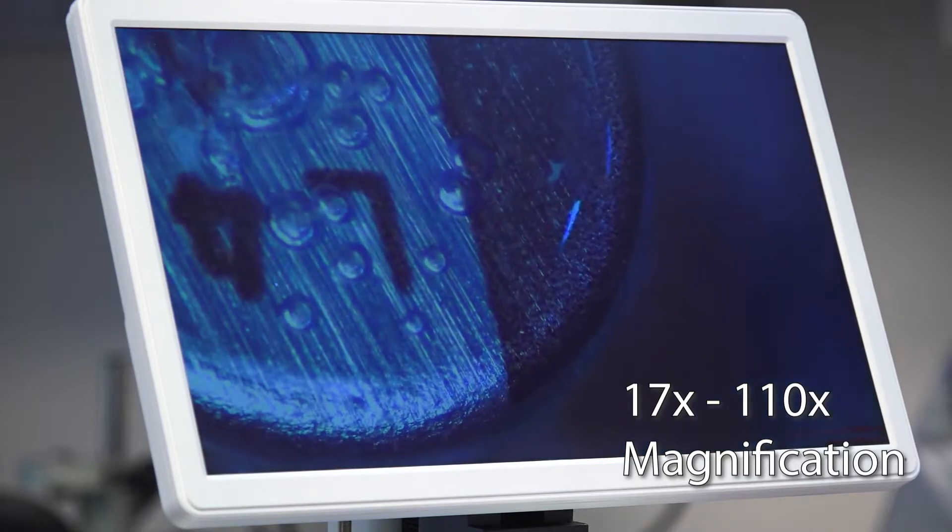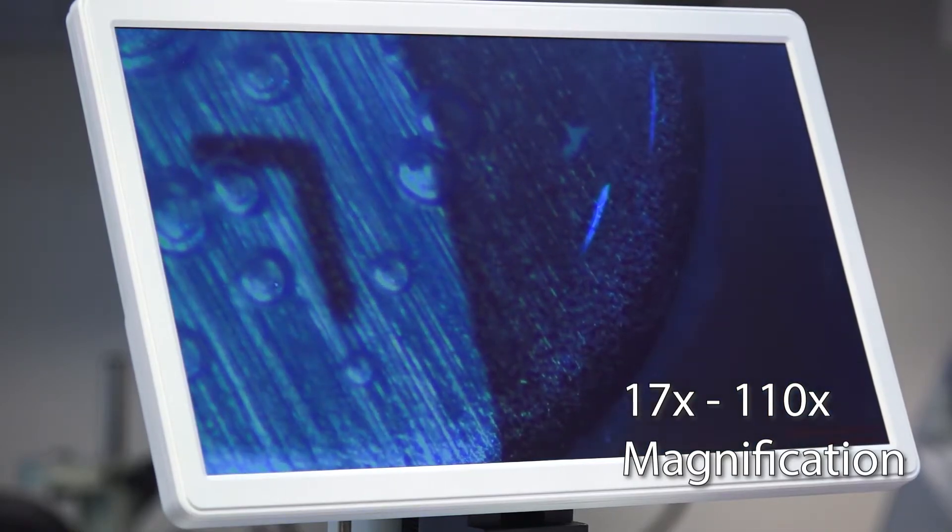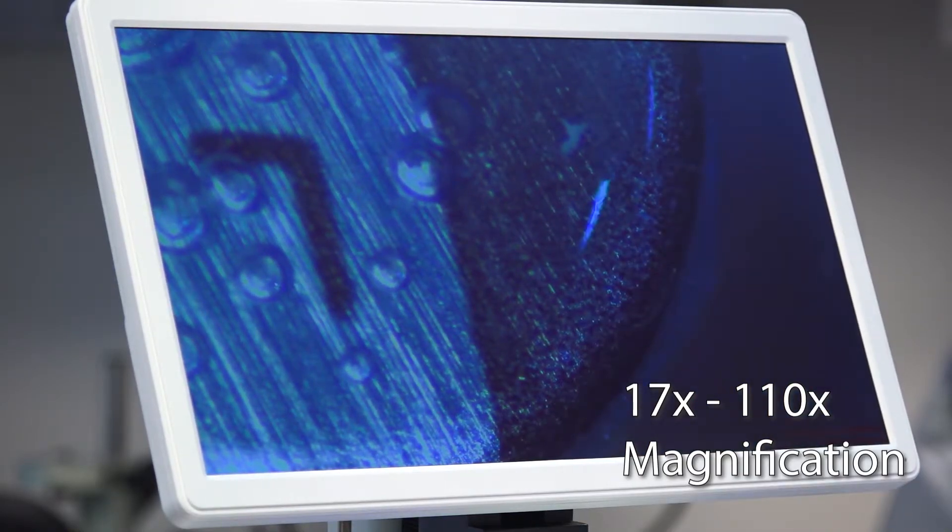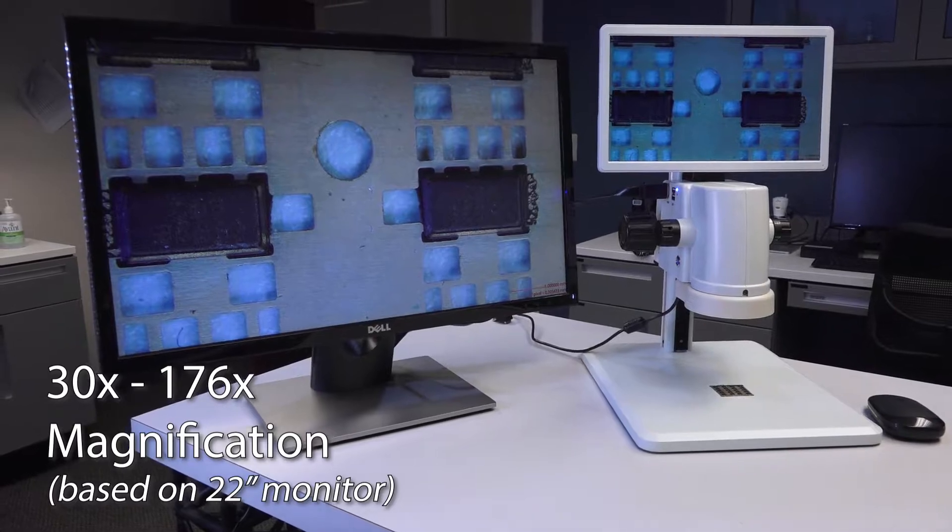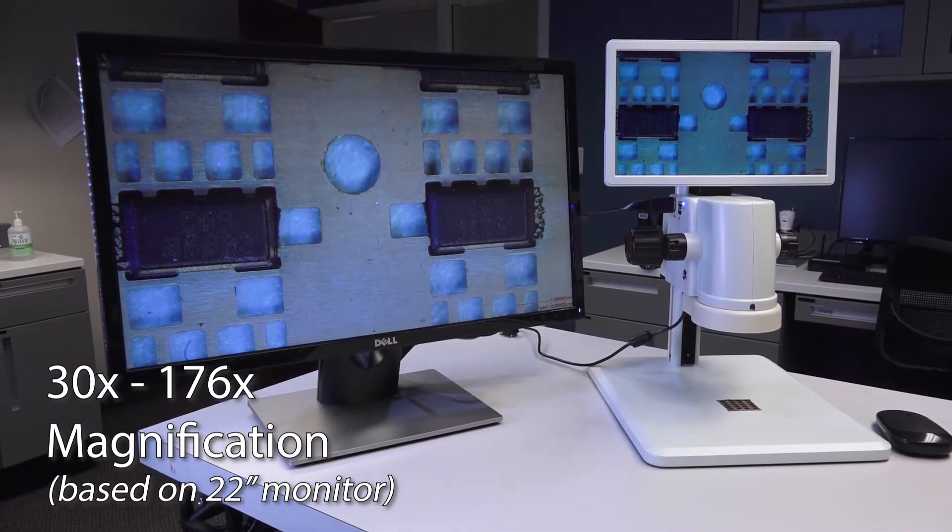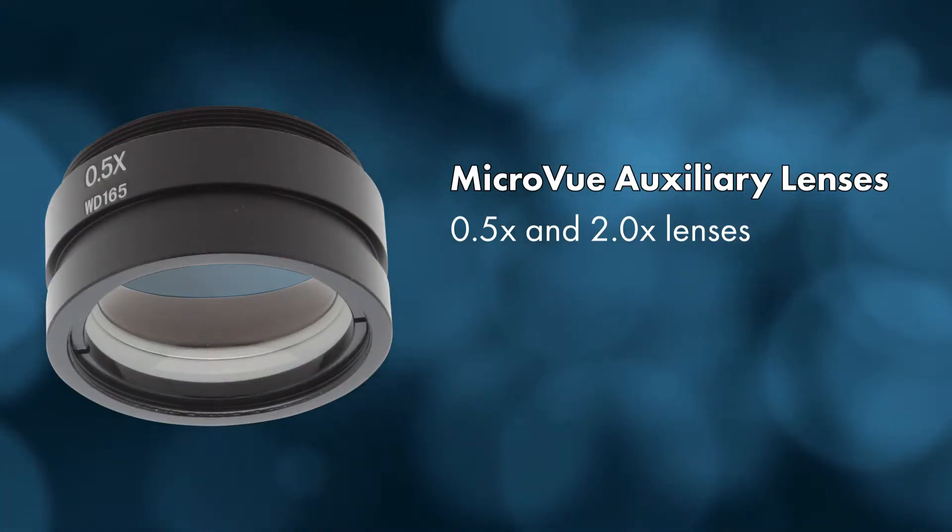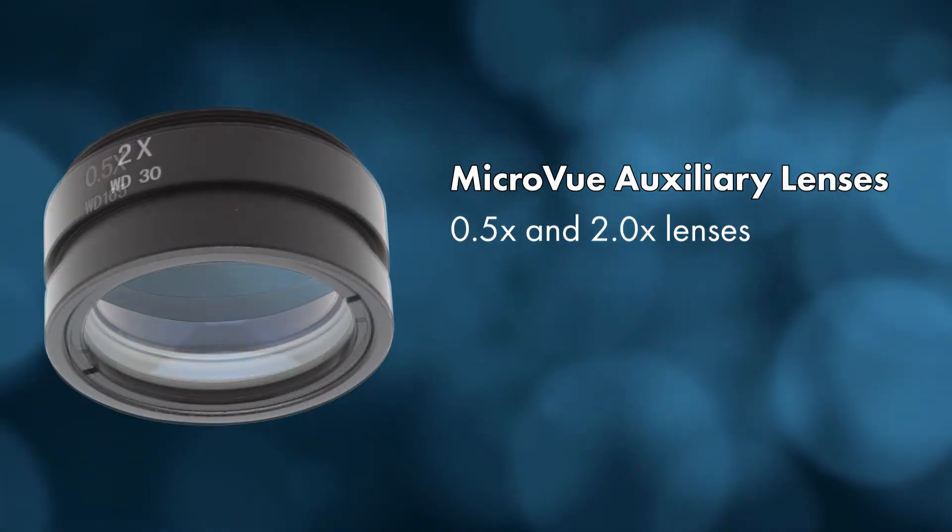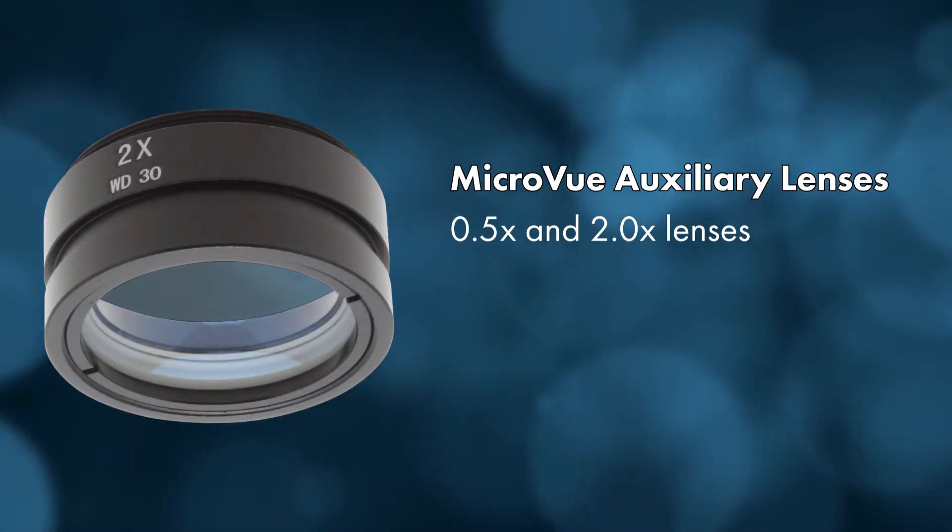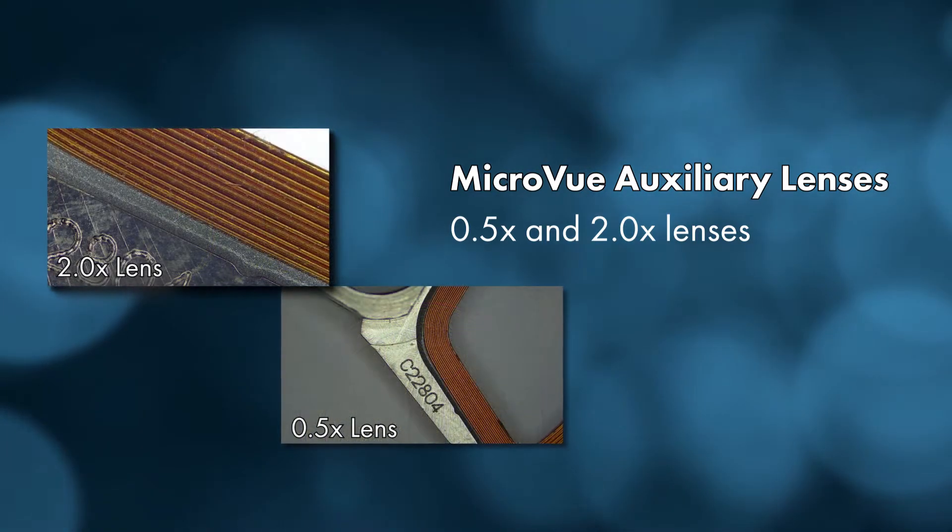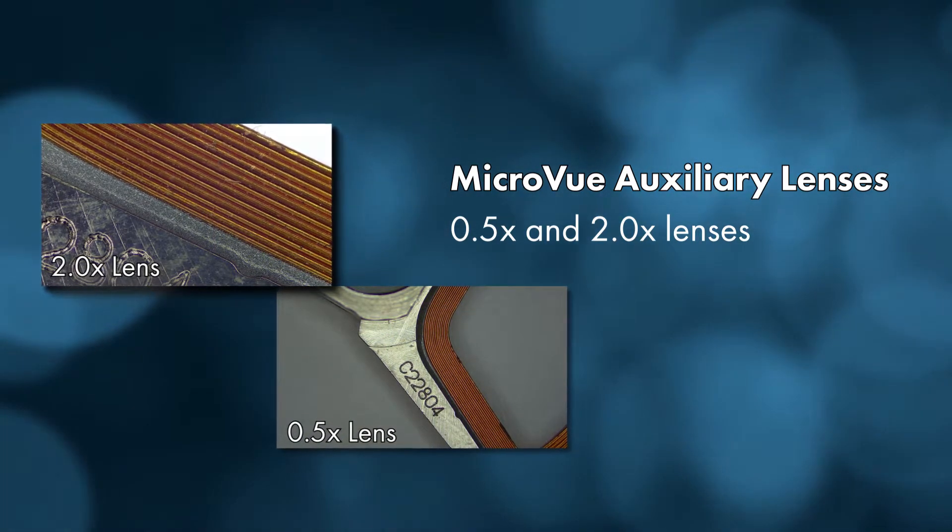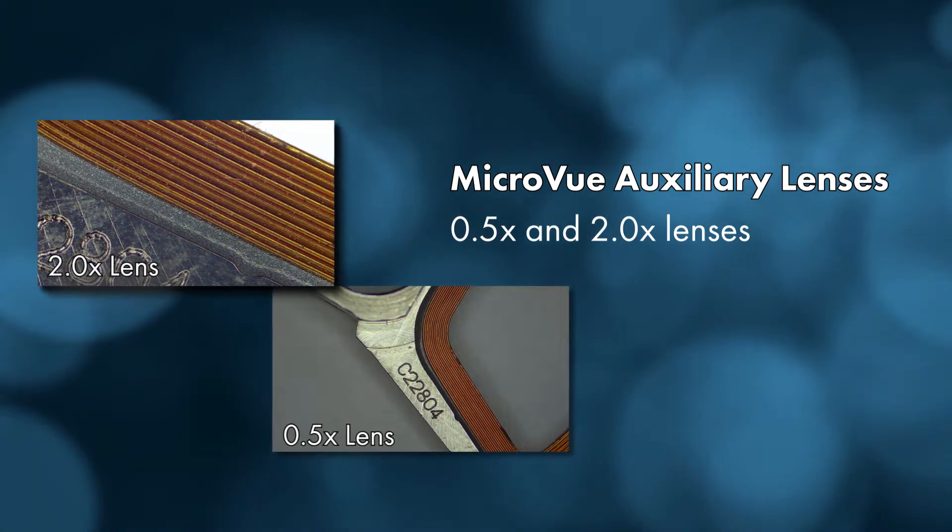Magnification for the base model is 17 to 110 on this monitor, and then when you go to an external monitor based on a 22 inch, it's 30x to 176x. And then we also have auxiliary lenses. We have a 0.5 lens which will cut magnification in half, and then a 2x lens will put us from 60x to 354x on that external 22 inch monitor.